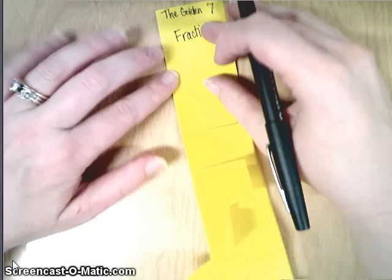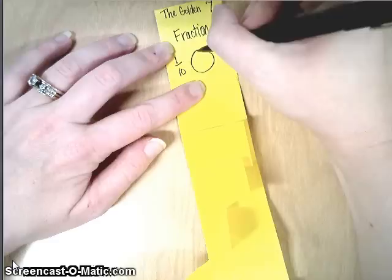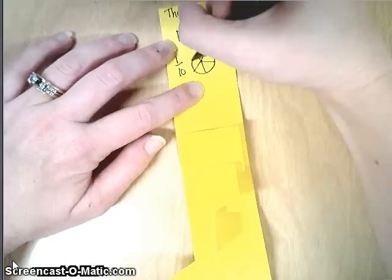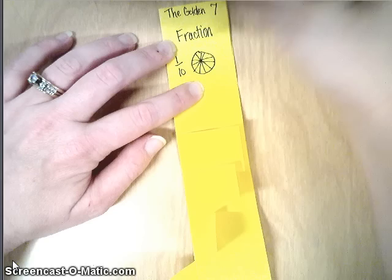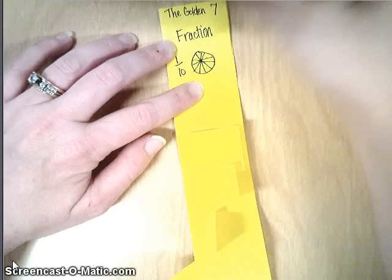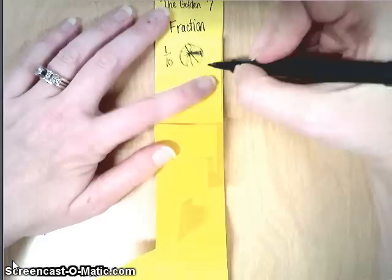So one tenth as a fraction. Start with fifths and cut each of those fifths into tenths, and then one of those is going to be one tenth. In money, here we are dealing with a dime, ten cents.